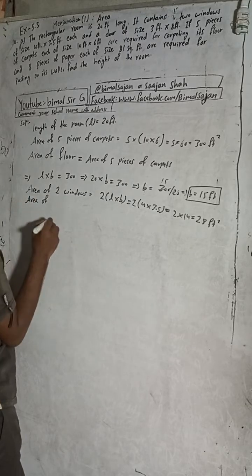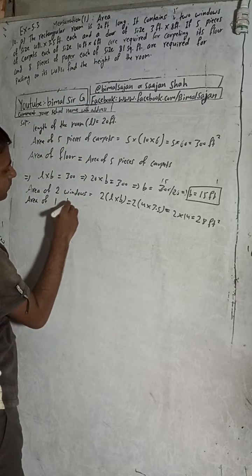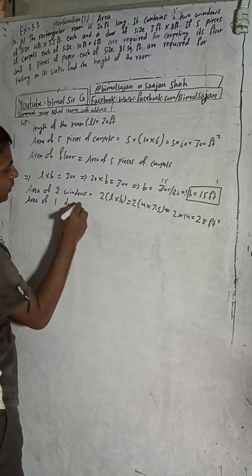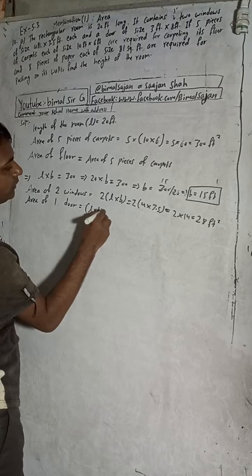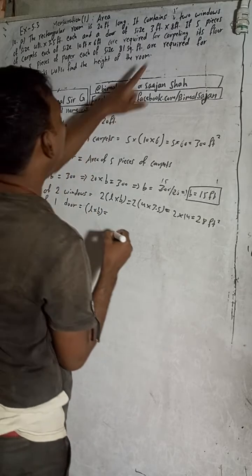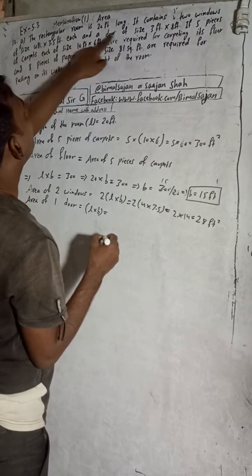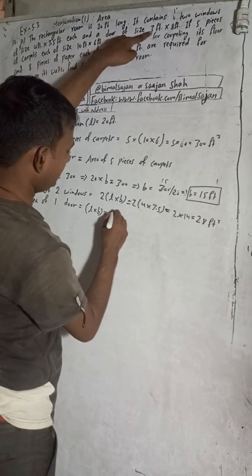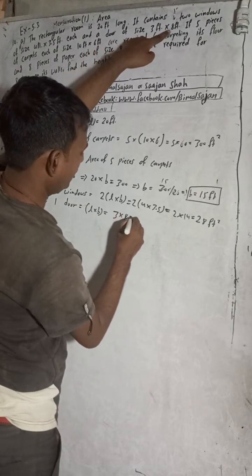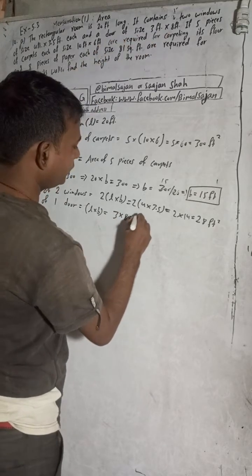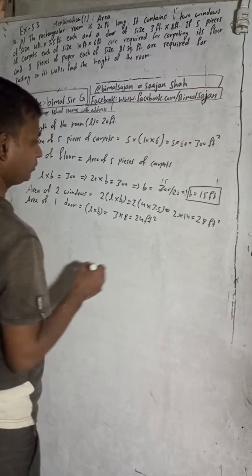Now the area of one door. There is one door, so its area is length by breadth. The door size is 3 feet by 8 feet, so the area equals 3 × 8, which is 24 square feet.